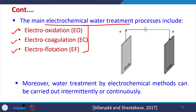Electrochemical treatment in general means any of these three processes or a combination of them. We will try to learn each technique in detail. In electrocoagulation there is a difference: in electrooxidation, the cathode or anode are stable, and organic pollutants get oxidized on the electrode surface or via reactive oxygen species generated in the bulk.